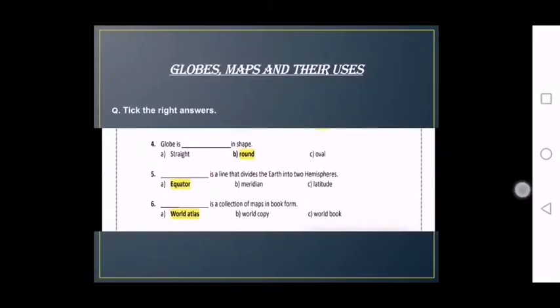Number 5. Dash is a line that divides the Earth into two hemispheres. The options are Equator, B Meridian and C, Latitude. The right one is Equator. Equator is a line that divides the Earth into two hemispheres.